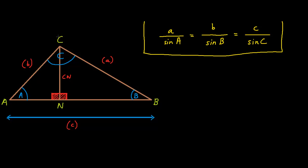On this triangle there are four vertices: a, b, c, and n. C and n join up together to make a length called cn. There are also other lengths to this triangle: small a, small b, and small c. On this triangle there are also angles — the angle a to our left, the angle b to our right, and the angle c at the top of the triangle.